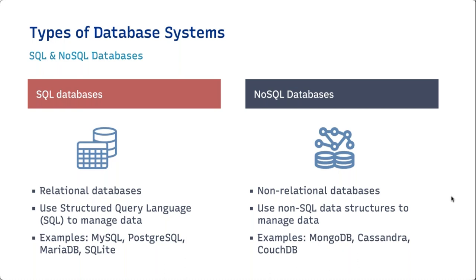SQL databases are relational databases, meaning data is kept in different tables, similar to what you see in a spreadsheet. We make relationships between tables using connections called foreign keys. We use a query language called SQL — Structured Query Language — to query, manage, or manipulate the data. Some examples are MySQL, which is the most popular SQL database, PostgreSQL, MariaDB, and SQLite.